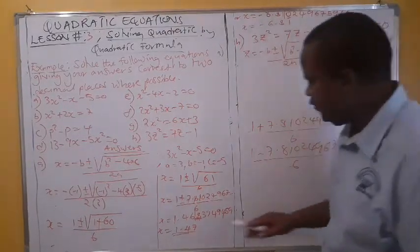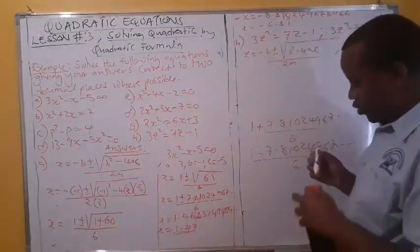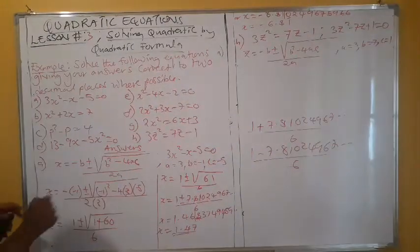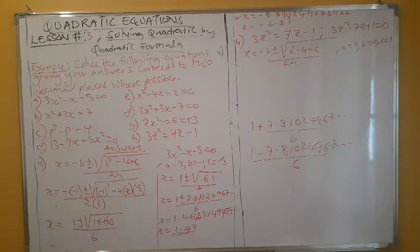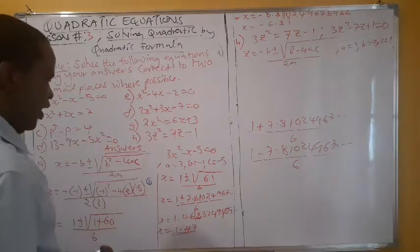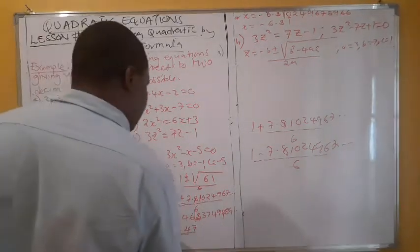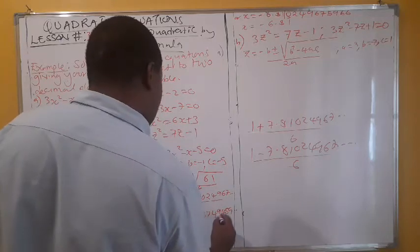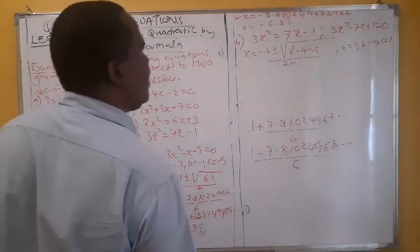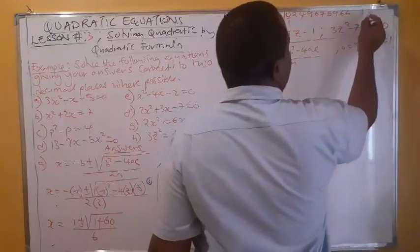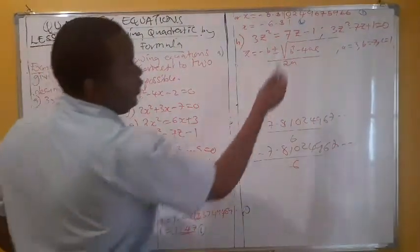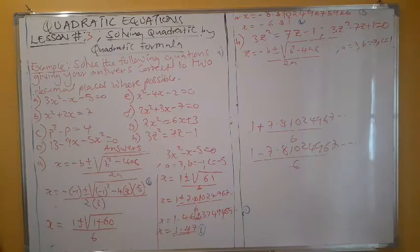So the two values are x ≈ 1.47 and x ≈ −1.14. Regarding how the five marks are awarded: one mark for correct substitution into the formula, one mark for writing the square root value in full, one mark for each final rounded answer — that gives you five marks altogether.